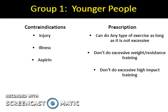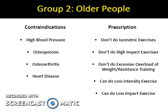The next group we looked at was older people. Some contraindications of older people performing exercises are high blood pressure, they are also more susceptible to diseases such as osteoporosis and osteoarthritis, and once you get older you are more likely to develop some heart diseases. High blood pressure is a relative contraindication which means that a person can partake in exercise however they should be monitored. An increase in blood pressure can cause weakening of the blood vessels, meaning blood may not circulate properly, potentially causing a heart attack or fatality.